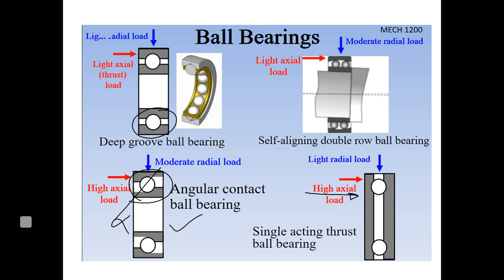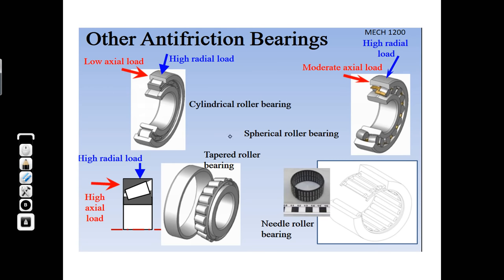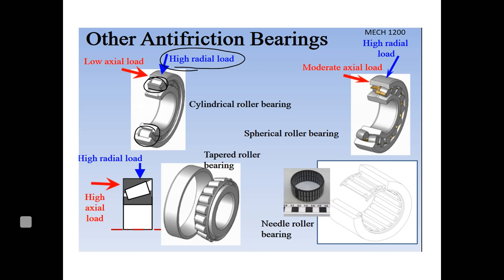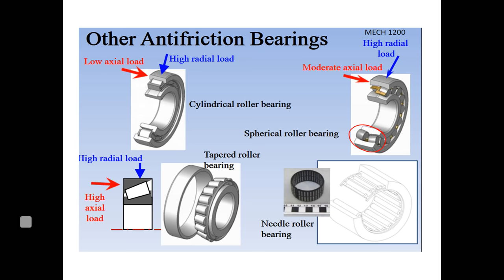When high axial or thrust load is present, we prefer the bearing called thrust bearing. If the element is a ball, we call it a thrust ball bearing. For anti-friction rolling elements — in this case cylindrical roller bearing — the element is a straight cylinder, making it highly capable of taking high radial loads. We prefer this bearing when radial loads are large. A small modification gives us a spherical roller bearing, where the rolling element shape is spherical rather than straight.